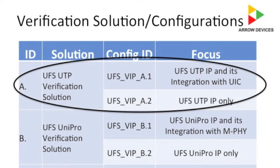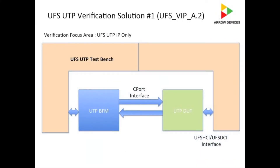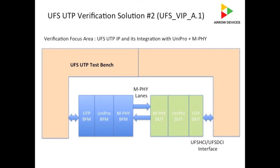Our UFS Verification solution has the capability to verify both host and device UTP layout. It can support two different configurations. The first configuration allows UFS DUT to UFS BFM connection without UIC — in this setup, UFS DUT is connected to UFS BFM through a spec-defined C-Port signal interface. The second configuration provides a connection with UIC, which includes UniPro plus M-PHY stack, where the M-PHY lanes of BFM are connected to M-PHY lanes of the DUT.